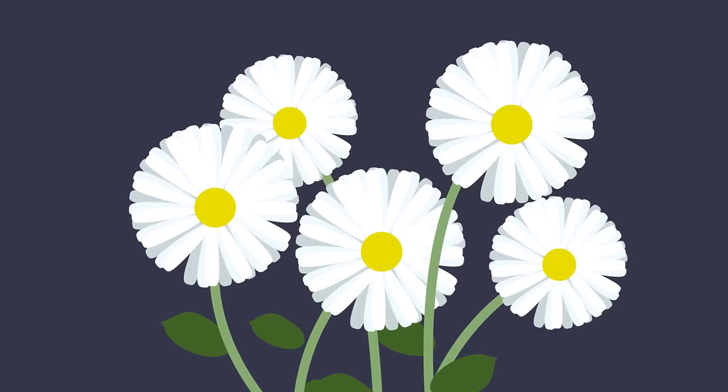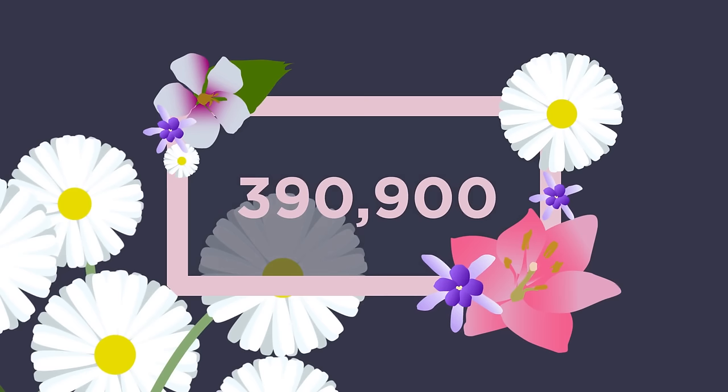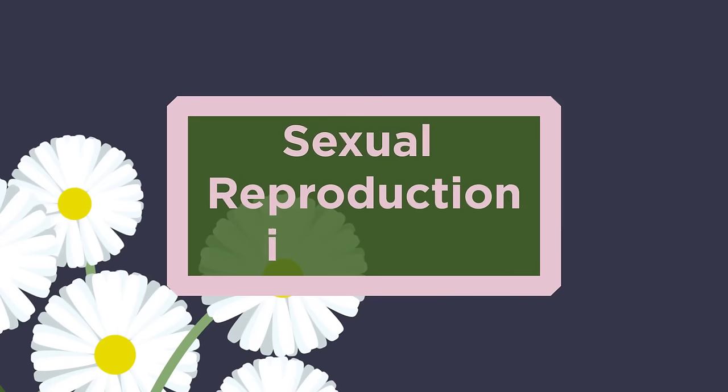In this video we will be looking at sexual reproduction in plants. Did you know that there are an estimated 390,900 plant species known to science? This diversity of plant species is in part due to sexual reproduction in plants.